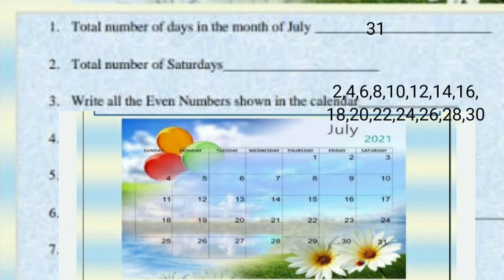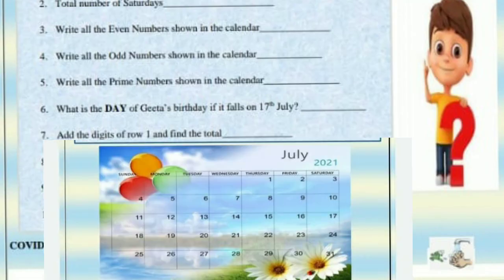Third: write all the even numbers shown in the calendar. The even numbers are: 2, 4, 6, 8, 10, 12, 14, 16, 18, 20, 22, 24, 26, 28, and 30.